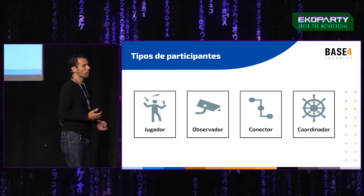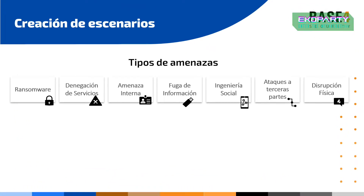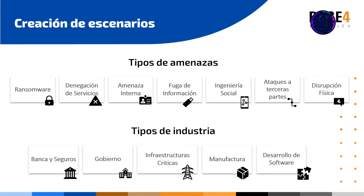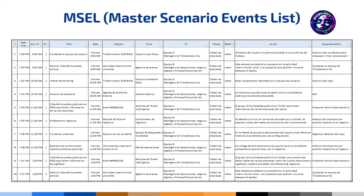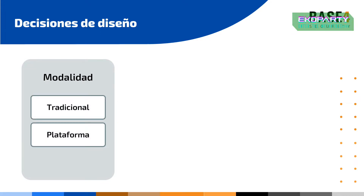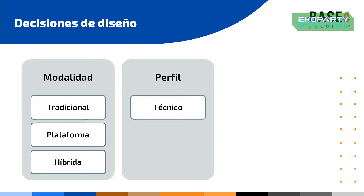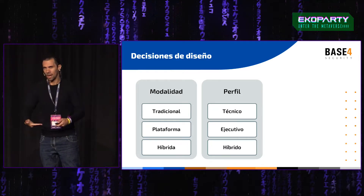El diseño del ejercicio es más complicado. Hay que crear escenarios, generalmente en función de algún tipo de amenaza conocida — agarramos ransomware, denegación de servicios, se pueden combinar algunos. Hay que acotarlo al tipo de industria: no es lo mismo un escenario para la industria financiera que para gobierno o infraestructuras críticas. Se termina reflejando en algo así — un Excel mucho más grande, con un montón de columnas y cientos de filas, donde cada cosita tiene que reflejarse después en un PowerPoint o en un software. Hay que tomar decisiones de diseño: la modalidad puede ser tradicional, basada en plataforma, o una combinación de ambas. El perfil de la audiencia puede ser más técnico, más ejecutivo, o una combinación. Y la interacción puede ser virtual, presencial o híbrida.